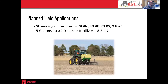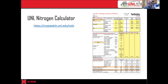We do plan some field applications. We're going to stream on some fertilizer before planting that includes 28 pounds of nitrogen, 49 pounds of phosphorus, 29 pounds of sulfur, and one-eighth of a tenth of a pound of zinc. We will also put on five gallons of starter — that 10-34-0 — which should give us about another 5.8 pounds of nitrogen.